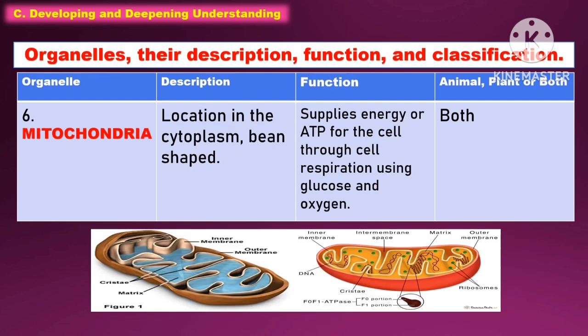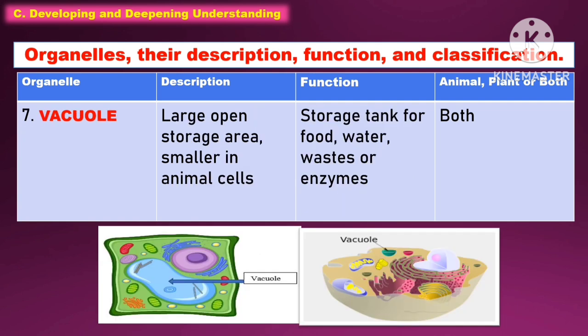Another organelle is the mitochondria. It is located in the cytoplasm and has a bean shape. The function of this is to supply energy or ATP for the cell through cellular respiration by using glucose and oxygen. It is present in both animal and plant cell.